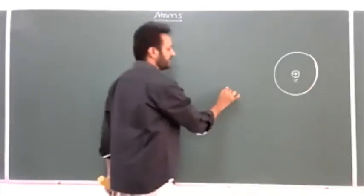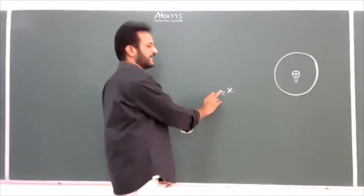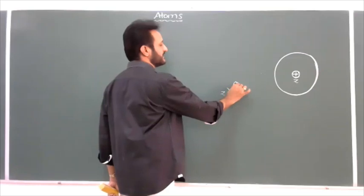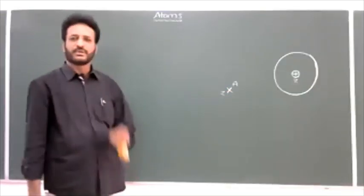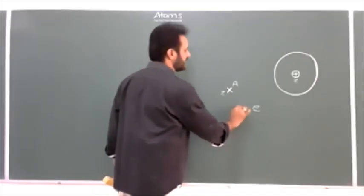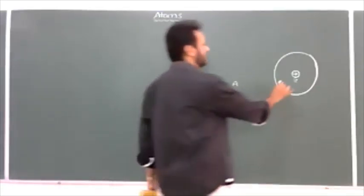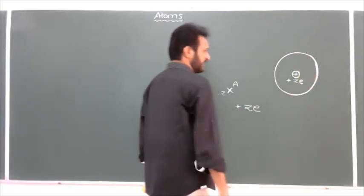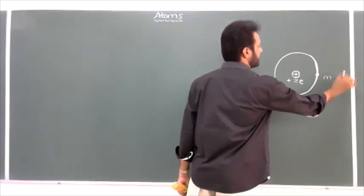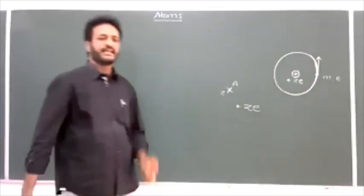Generally, if we take one element X, the atomic number is always represented as Z, which is equal to the number of protons and also number of electrons. A is equal to mass number, which indicates the sum of protons plus neutrons. If one nucleus contains Z protons, the charge of one proton is equal to plus e, then Z protons gives charge plus Ze. So the charge of the given nucleus is plus Ze.